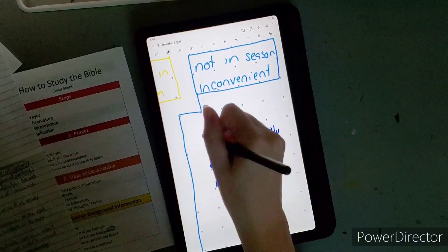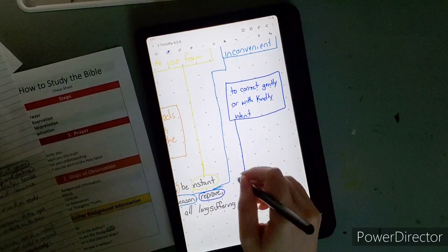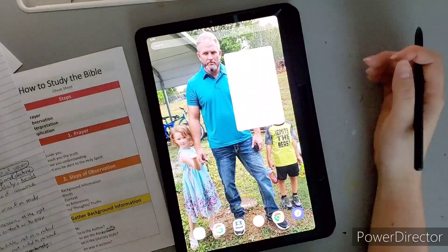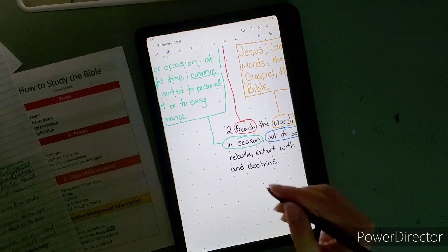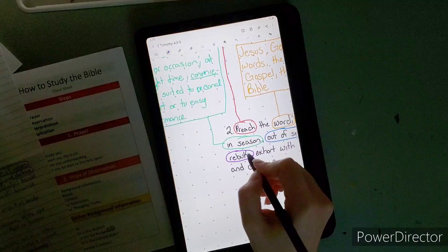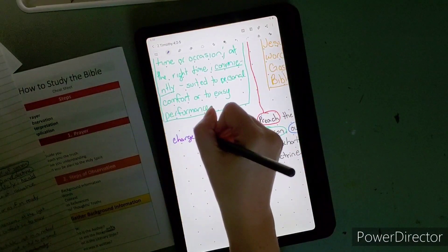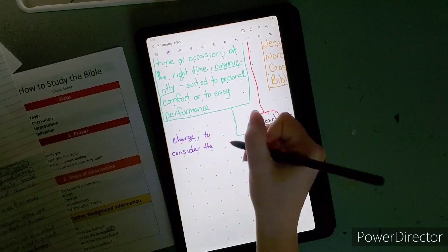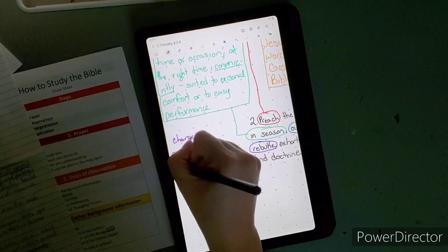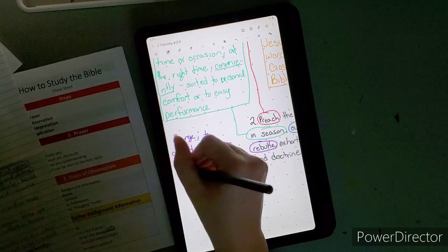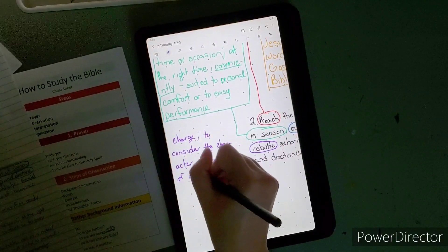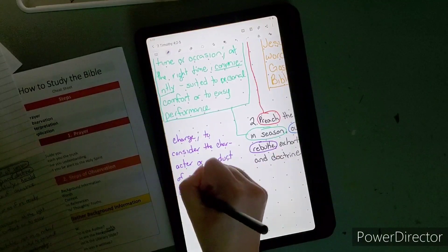Rebuke is to consider the character or conduct of and judge accordingly and ascribe guilt to. Most people are going to be like whoa. Look in Romans 3:19. It says now we know that whatsoever the law sayeth, it says to them that are under the law, that every mouth may be stopped and all the world may become guilty before God.